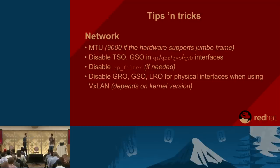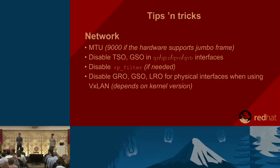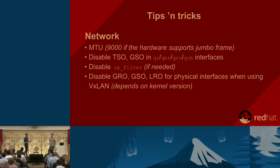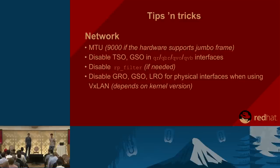Another issue depending on your architecture is the reverse path filter — where traffic enters through one interface and exits through another. By default this is disabled, so use a sysctl command to disable the RP filter protection. Finally, depending on the kernel version and only if you are using VXLAN, you may need to disable the GRO, GSO, and LRO flags on the physical interface of the compute node. Certain VXLAN and kernel version combinations can cause compute crashes, so pay attention to these flags.